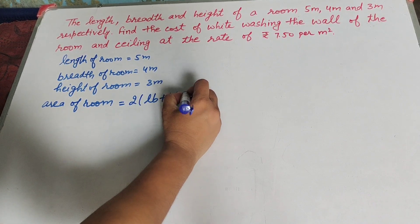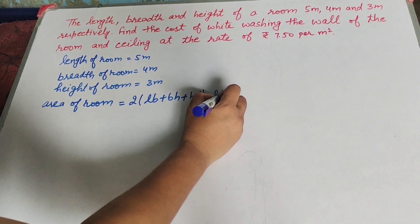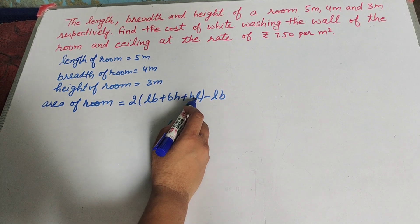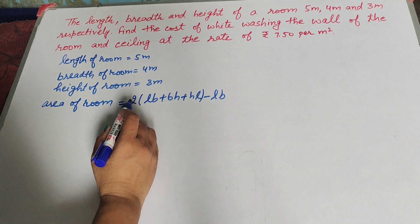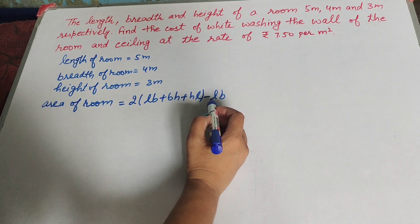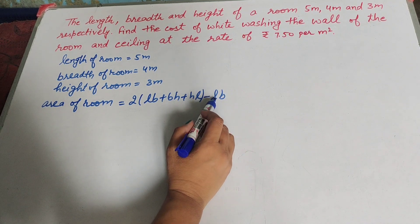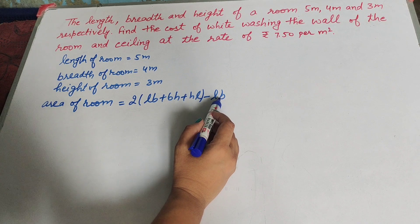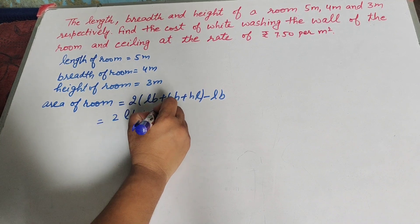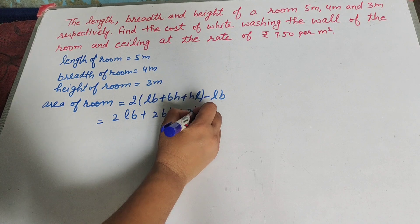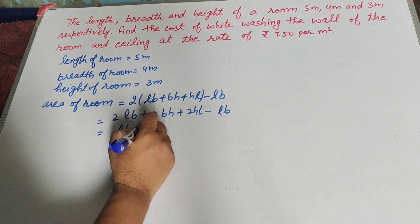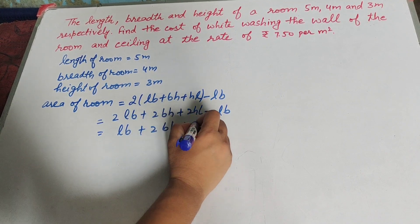The total surface area of a cuboid is 2(LB + BH + HL). However, since only the 4 walls and ceiling are whitewashed and the floor is not whitewashed, we subtract the area of the floor, which is length into breadth. So the required area is: 2LB + 2BH + 2HL minus LB, which simplifies to LB + 2BH + 2HL.